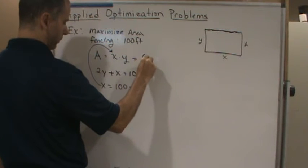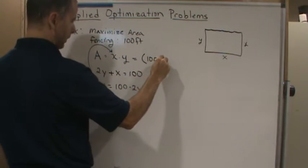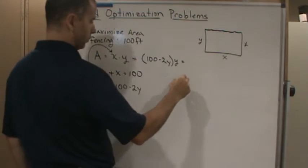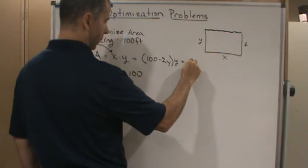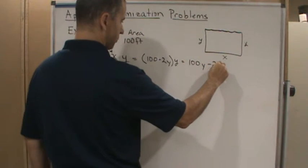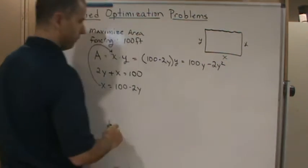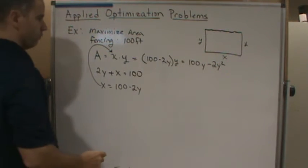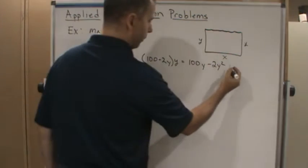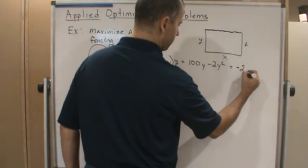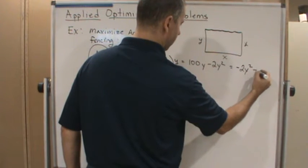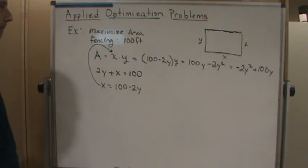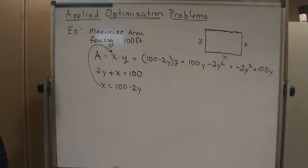Now we substitute x into the area formula: A equals (100 minus 2y) times y, which equals 100y minus 2y squared. We can rewrite this as negative 2y squared plus 100y. So now we have a quadratic polynomial.